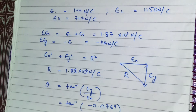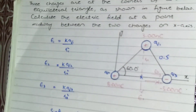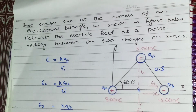The resultant electric field is 1.88×10³ N/C at 4.40° below the positive x-axis. Hope you liked the method and have understood the question. Please subscribe to my channel and share with your friends as well.